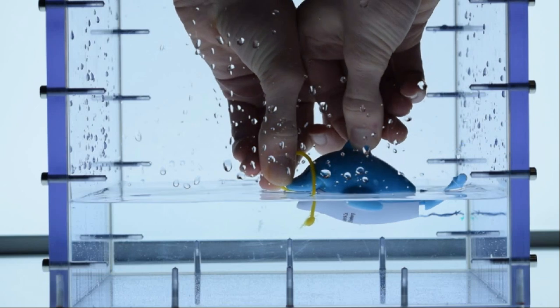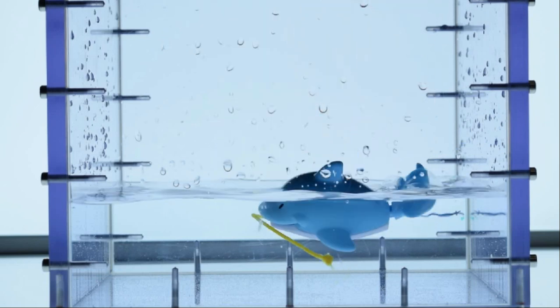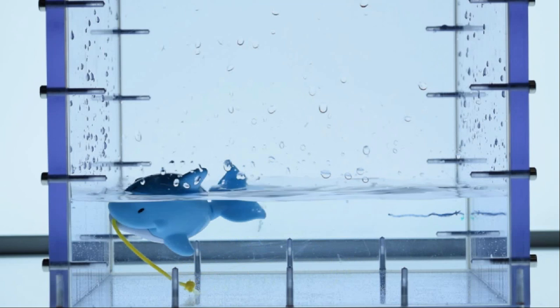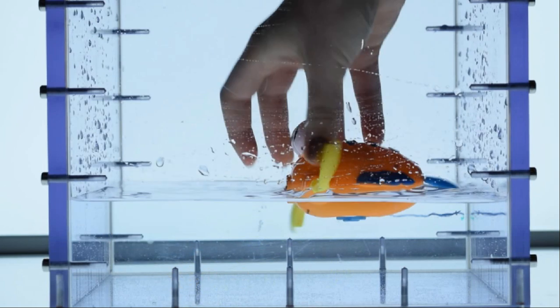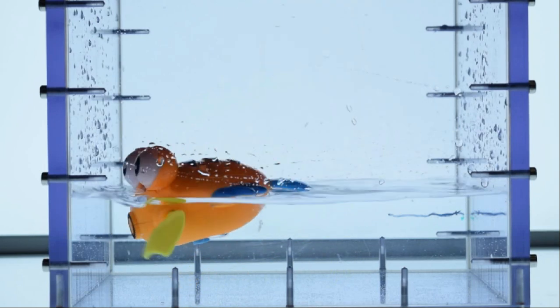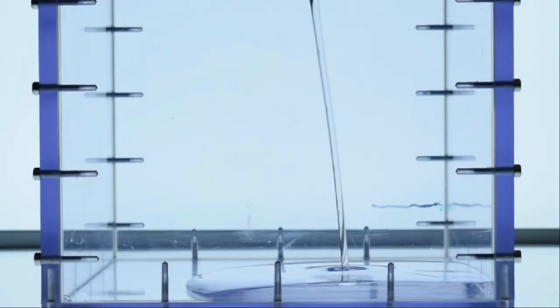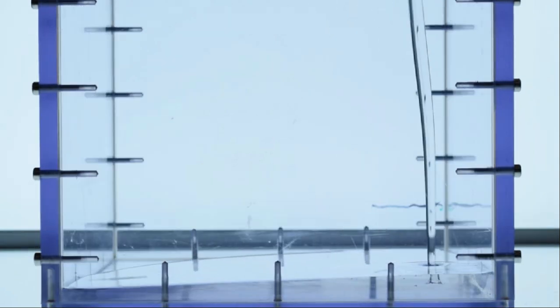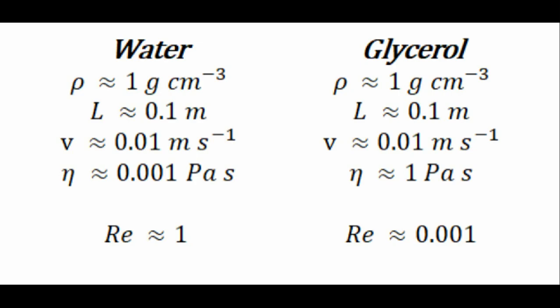First, we let Lucas swim in a container of water. As expected, he reaches the other end of the container with no problems. June has no troubles swimming in the water either. Now, we fill the container with glycerol instead of water. Glycerol has a viscosity that is about a thousand times higher than the viscosity of water, meaning the Reynolds number will be three orders of magnitude lower than that of water.